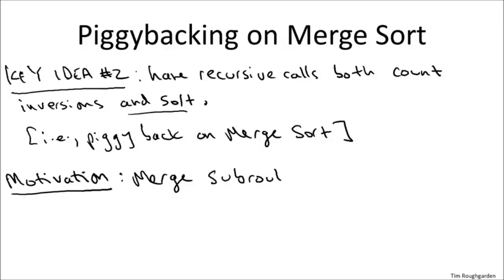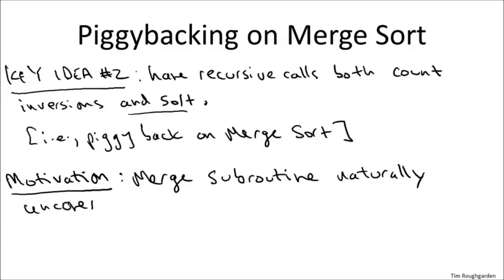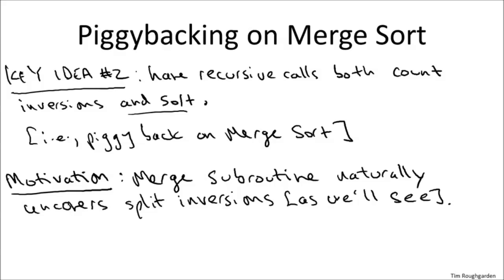Why should we demand more of our recursive calls? As we'll see, the merge subroutine almost seems designed just to count the number of split inversions. As you merge two sorted subarrays, you will naturally uncover all of the split inversions. So our previous high-level algorithm is going to be souped up so that the recursive calls sort as well.